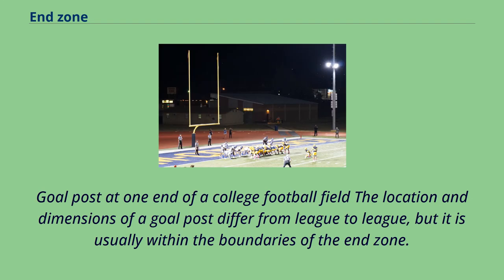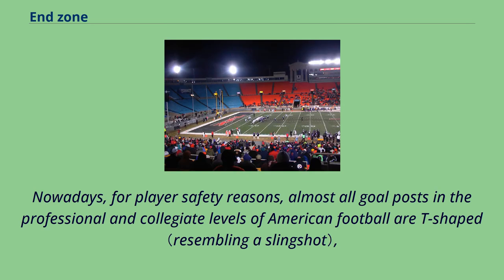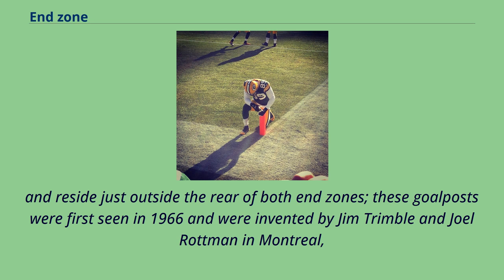The location and dimensions of a goalpost differ from league to league, but it is usually within the boundaries of the end zone. In earlier football games, the goalpost began at the goal line and was usually an H-shaped bar. Nowadays, for player safety reasons, almost all goalposts at the professional and collegiate levels of American football are T-shaped, and reside just outside the rear of both end zones. These goalposts were first seen in 1966 and were invented by Jim Trimble and Joel Rotman in Montreal, Quebec, Canada.